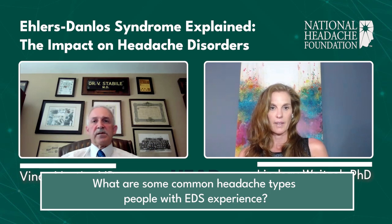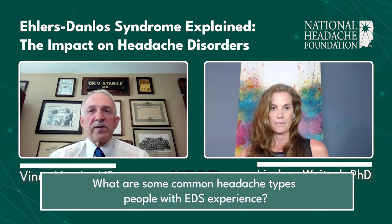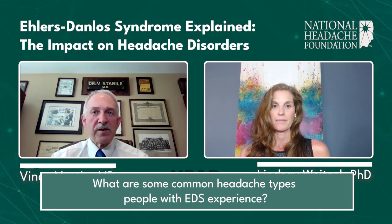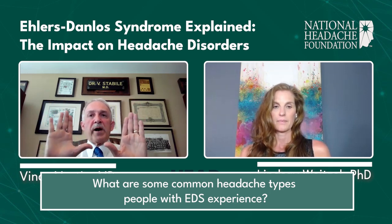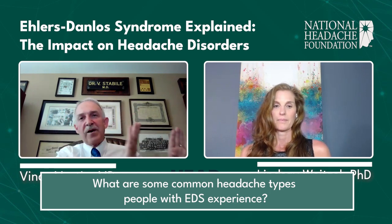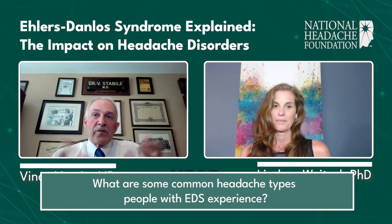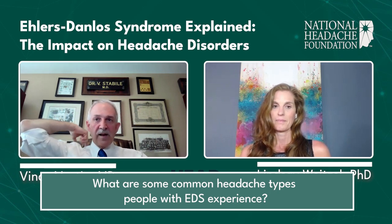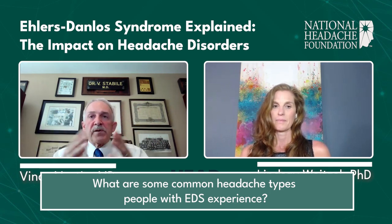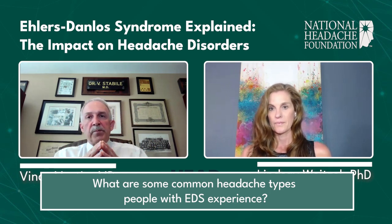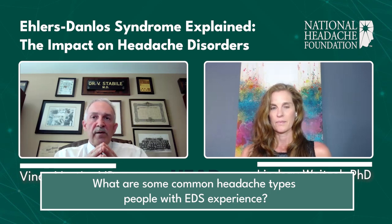One type is headaches associated with POTS syndrome, where your heart races. You can usually identify these patients because their pulse is above 100 just resting in the office. When you move them from lying to standing, their heart rate goes up by over 30 beats per minute without much change in blood pressure—that's how you diagnose POTS. POTS has specific headaches associated with it, like a coat-hanger headache that goes through the shoulders and up into the back of the head. Sometimes treating with a beta blocker to slow the heart rate can make a big difference not only for POTS symptoms but for the associated headaches.